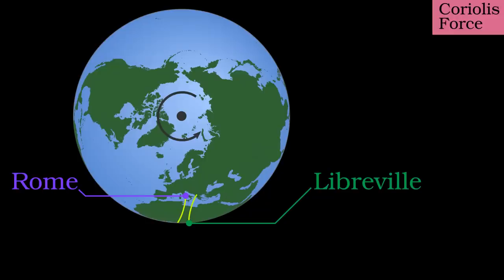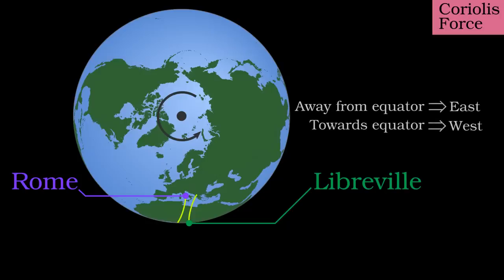The Coriolis force is mirrored in the southern hemisphere. Generally speaking, shells flying away from the equator go eastwards, while those flying towards the equator go westwards. This aspect isn't important for the total range of an artillery piece, but it is important for accuracy.